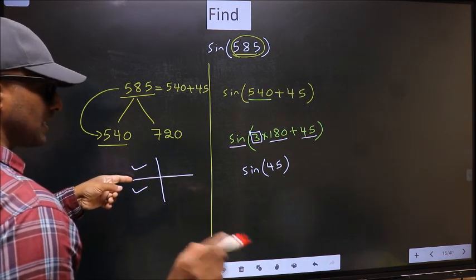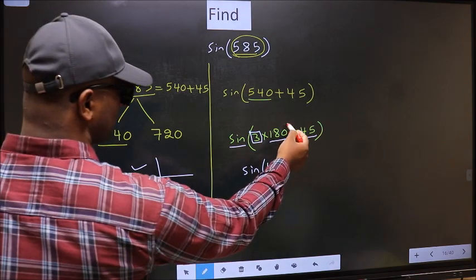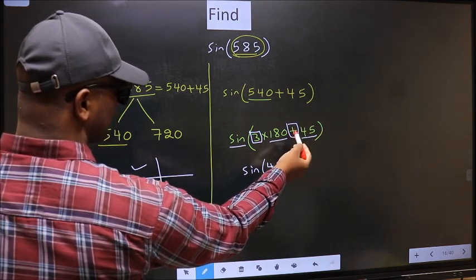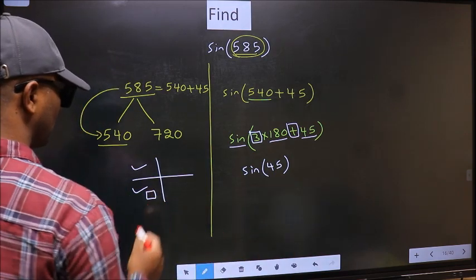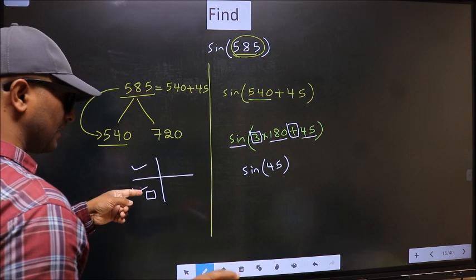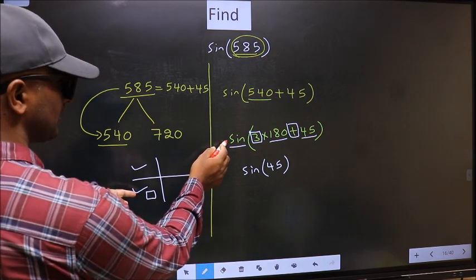So, now to select the quadrant, we should look at this symbol. Here we have plus. That means the angle lies in the third quadrant. And in the third quadrant, sin is negative.